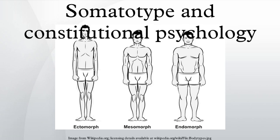Sheldon and Ernest Hooton were seen as leaders of a school of thought, popular in anthropology at the time, which held that the size and shape of a person's body indicated intelligence, moral worth, and future achievement.